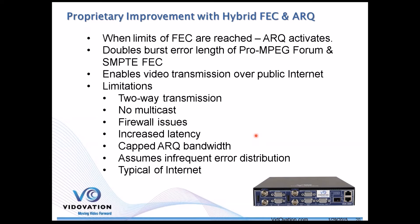When the limits of FEC are reached, ARQ activates in the hybrid approach. We showed how we can double the burst error rate using that technique. But if we go over the public internet, it can give some ability, though the internet can be much worse. The drawbacks of ARQ include two-way transmission, multicast limitations, firewall issues, increased latency, needing to cap ARQ, and assuming infrequent error distribution. If the ARQ keeps coming through on the following frame when FEC is struggling, and errors become more frequent, the whole system falls apart.